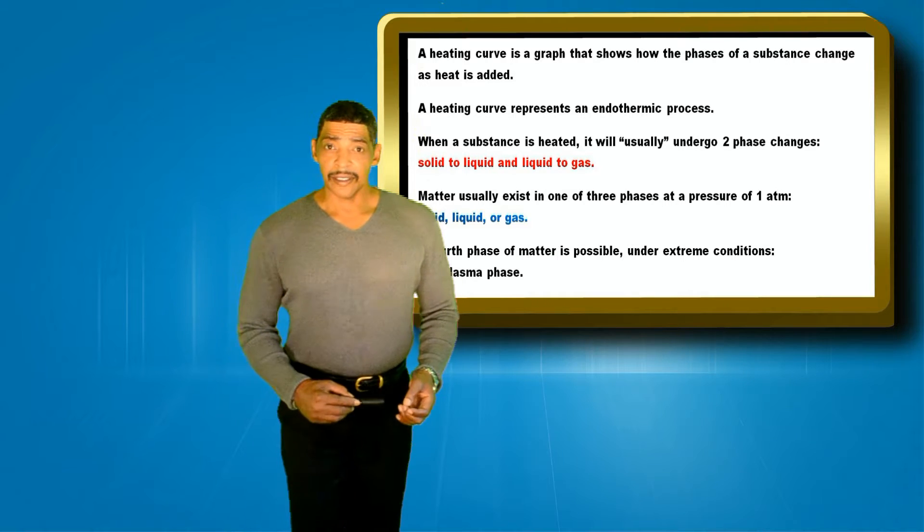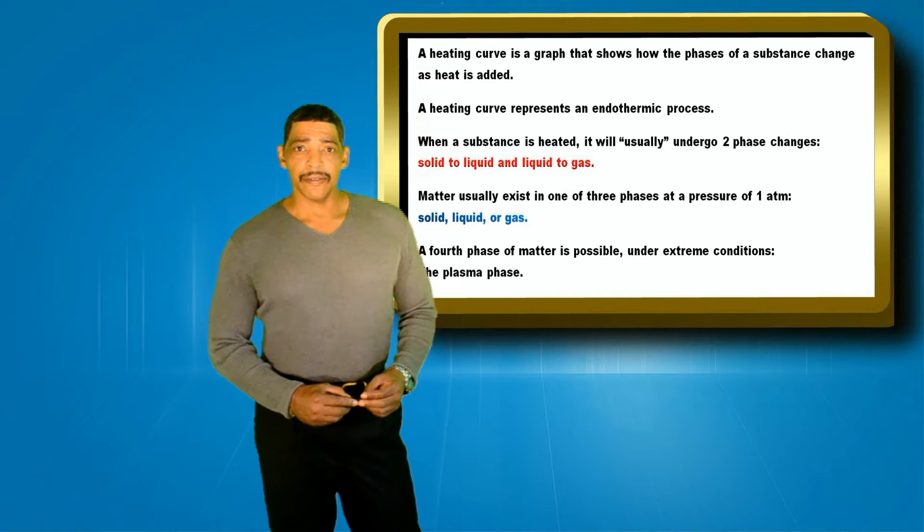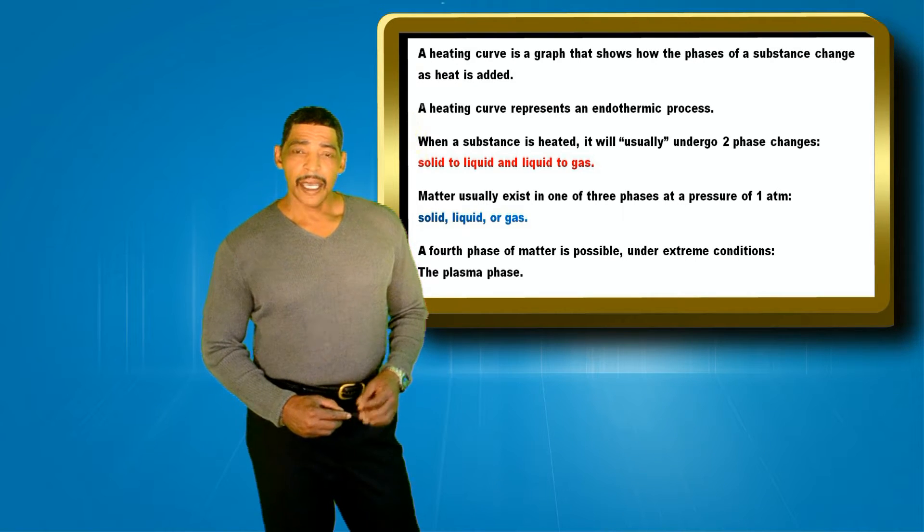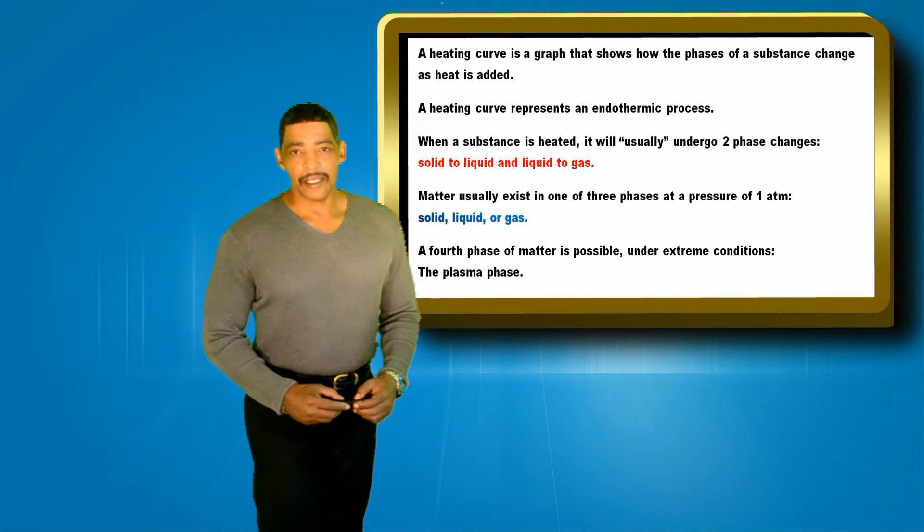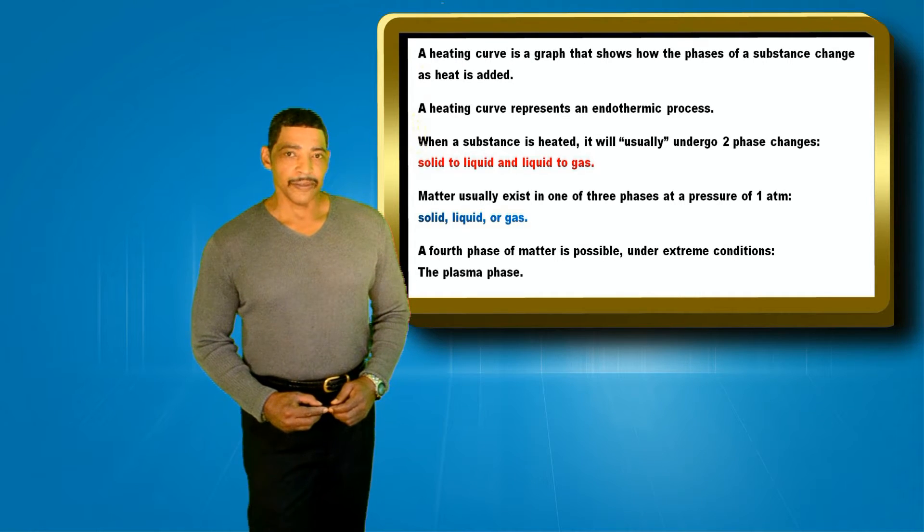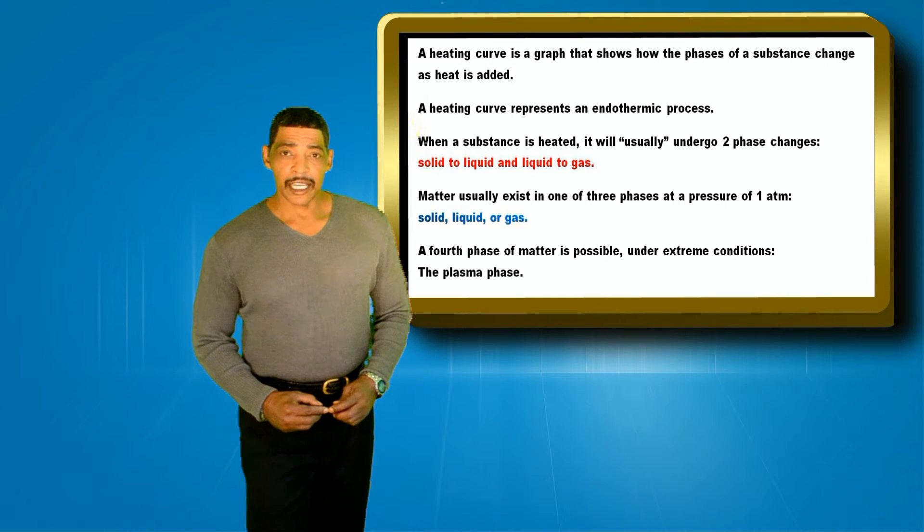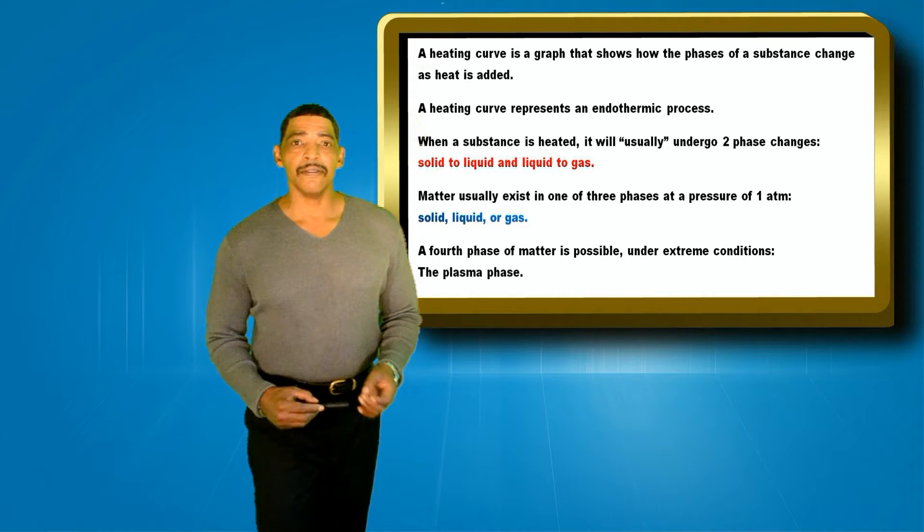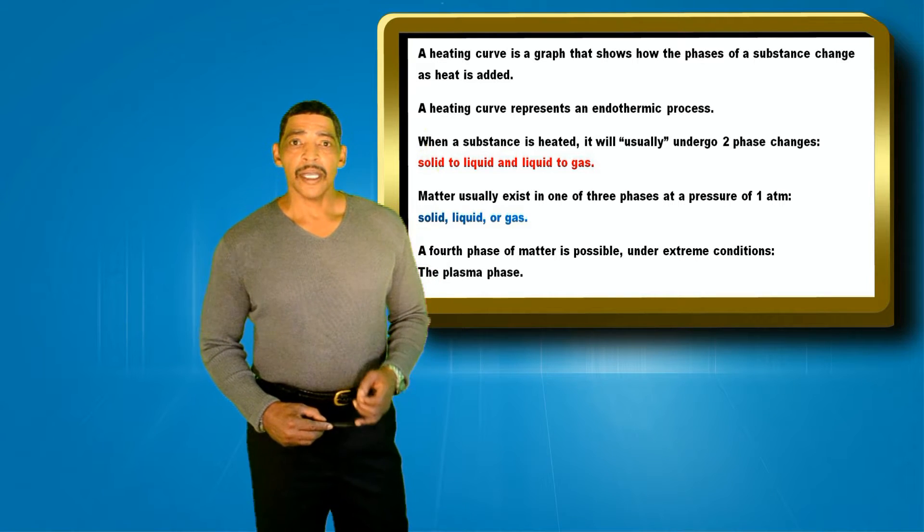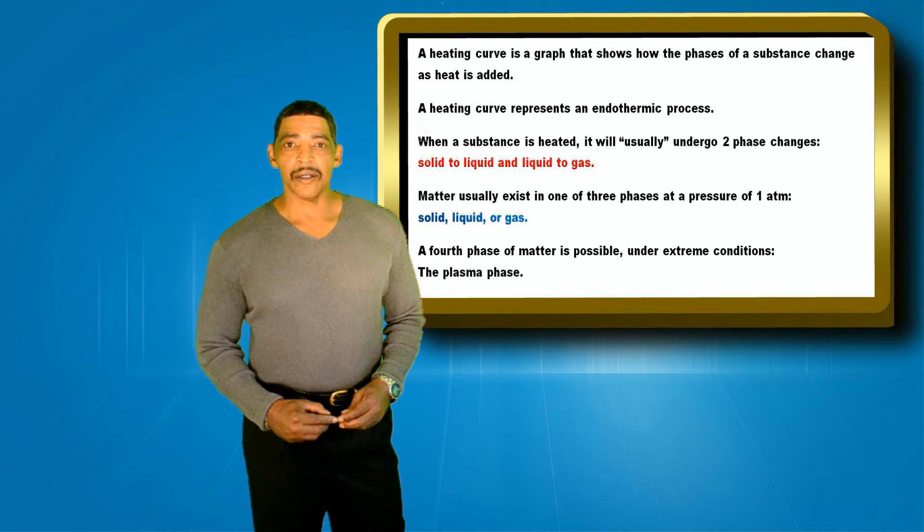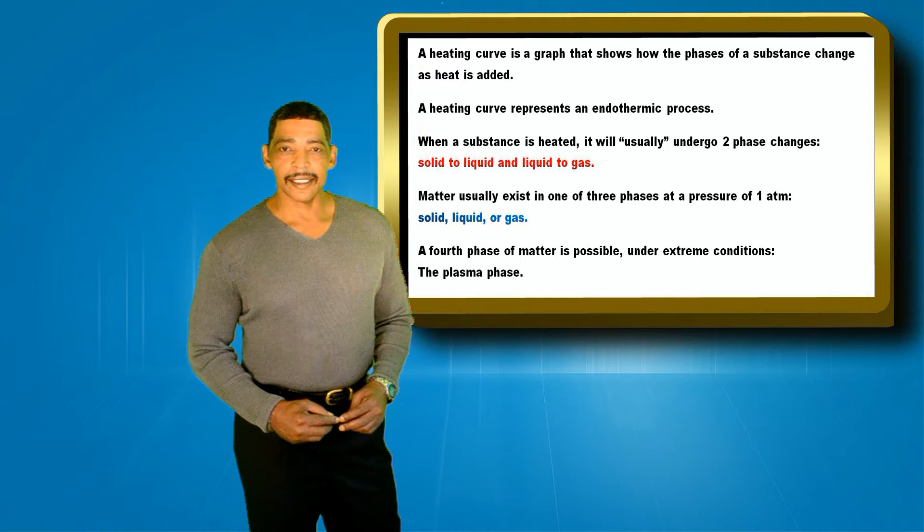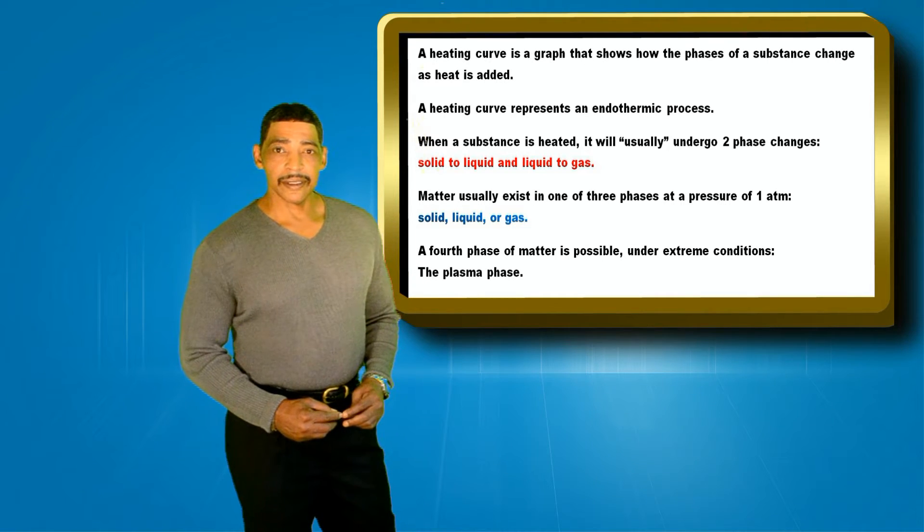Matter usually exists in one of three different phases: solid, liquid, or gas. However, a fourth phase of matter is possible. This is called the plasma phase. Matter that is in the plasma phase is completely devoid of electrons. Although in the plasma phase matter is in a vaporized state, the plasma phase is not indicated on a typical heating curve.